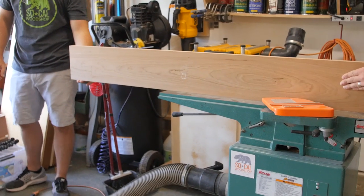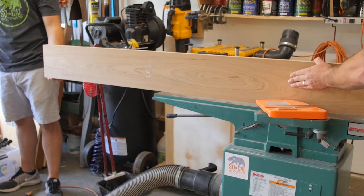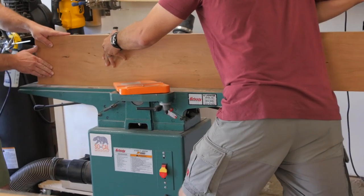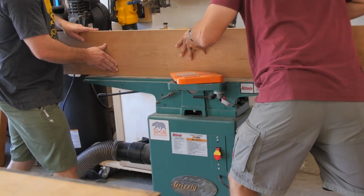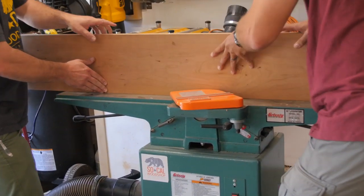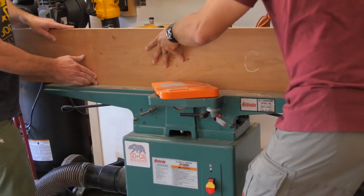And then it was time to take it over to the jointer and mill the edges so that we could glue it up nice and clean. That tool there is called a jointer, and it allows you to make sure that the edges of each board are 90 degrees so that when you go to glue them together, you have nice solid seams and you don't have any weird gaps.